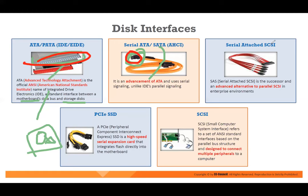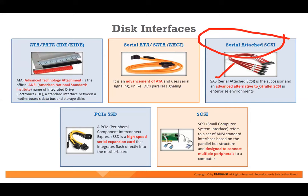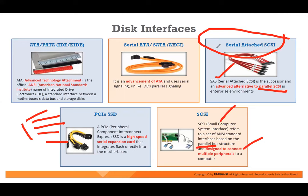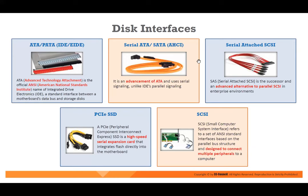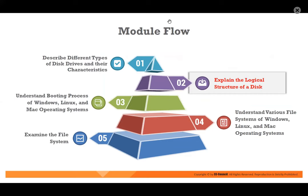Another interface is SAS — serial attached SCSI, the successor and advanced alternative to parallel SCSI. SCSI sends all bits in parallel, whereas serial sends bit by bit. SCSI is a small computer system interface referring to an ANSI standard based on a parallel bus, designed to connect multiple peripherals to the computer. Please understand these are different disc interfaces. It's not just one type — it could be different types. Are you able to understand now? Different types of disc drives and their characteristics.